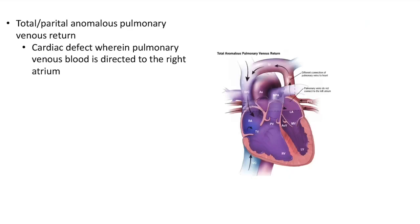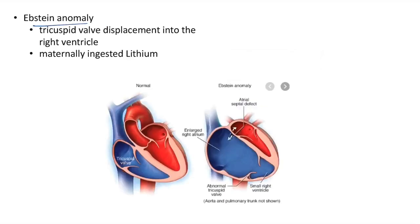In total or partial anomalous pulmonary venous return, venous blood returns to the right atrium. The pulmonary veins do not connect to the left atrium — there is a different connection of pulmonary veins to the heart.